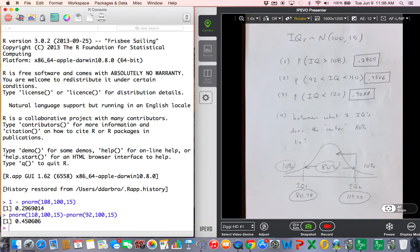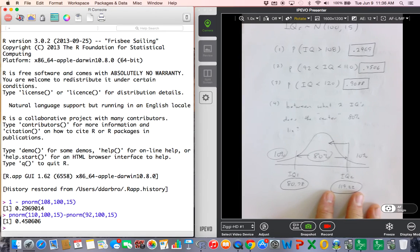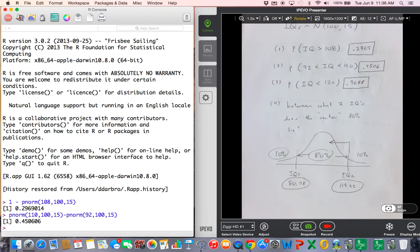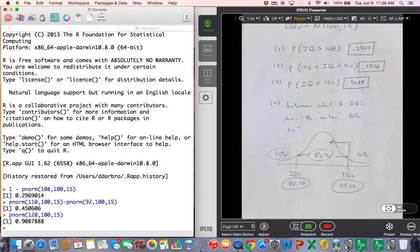Now, guys, if your problem like the number three there, if your problem is just strictly below 120, then, you know, life is good. It's just just a direct entry and so you get 0.9088.